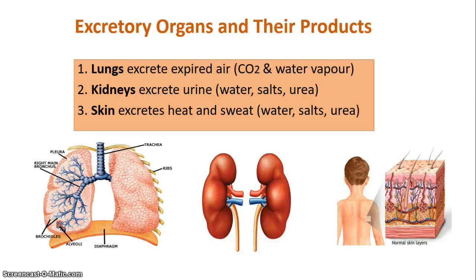The second organ, the kidneys, is responsible for excreting urine. Urine is the liquid removed from the body and it contains water, salts, and urea — those are the main substances found in urine. The skin is the last excretory organ and it excretes heat and sweat. It's responsible for temperature regulation, getting rid of excess heat that builds up in the body. The sweat produced also contains water, salts, and urea, similar in composition to urine but in different proportions.